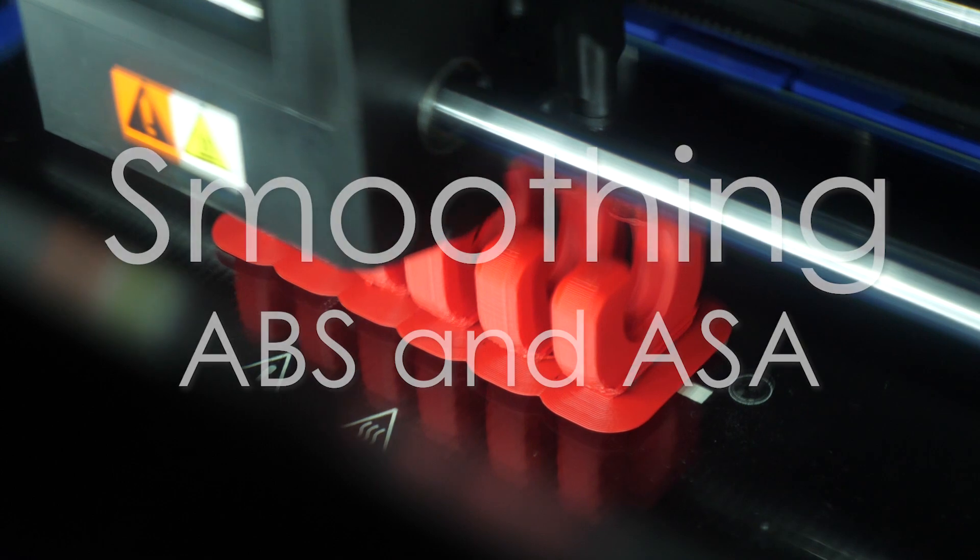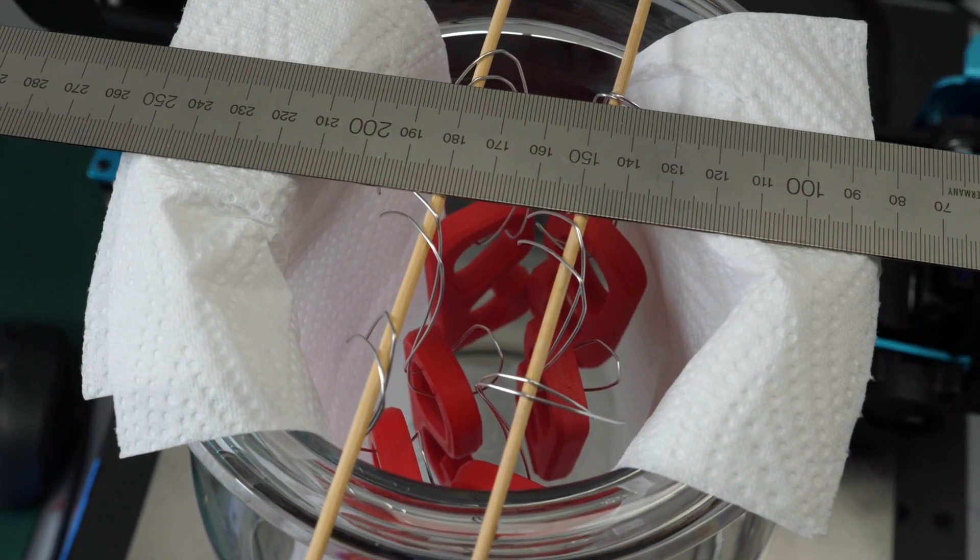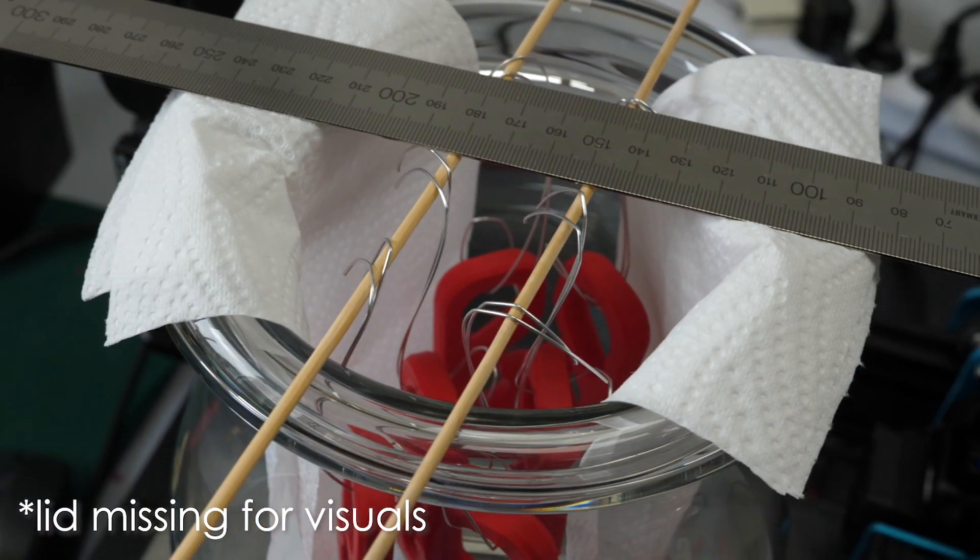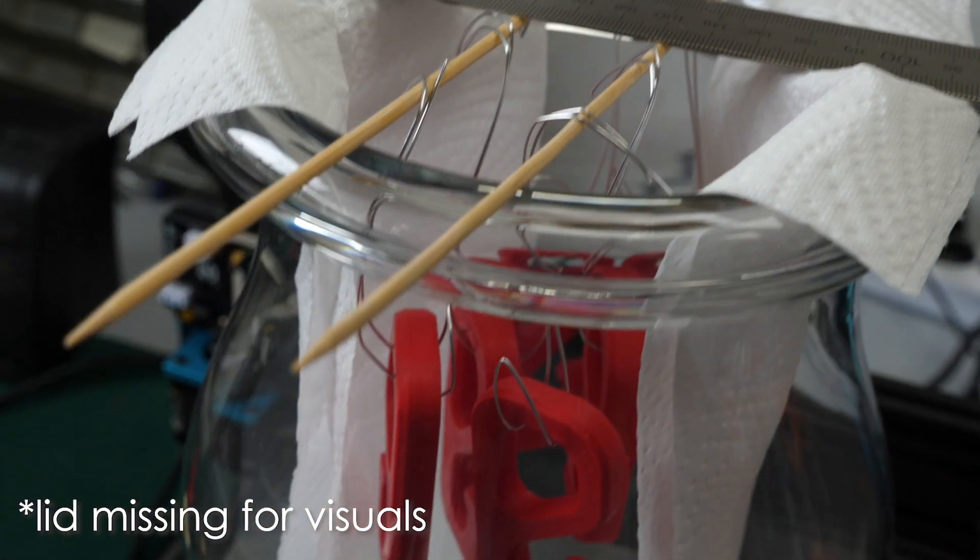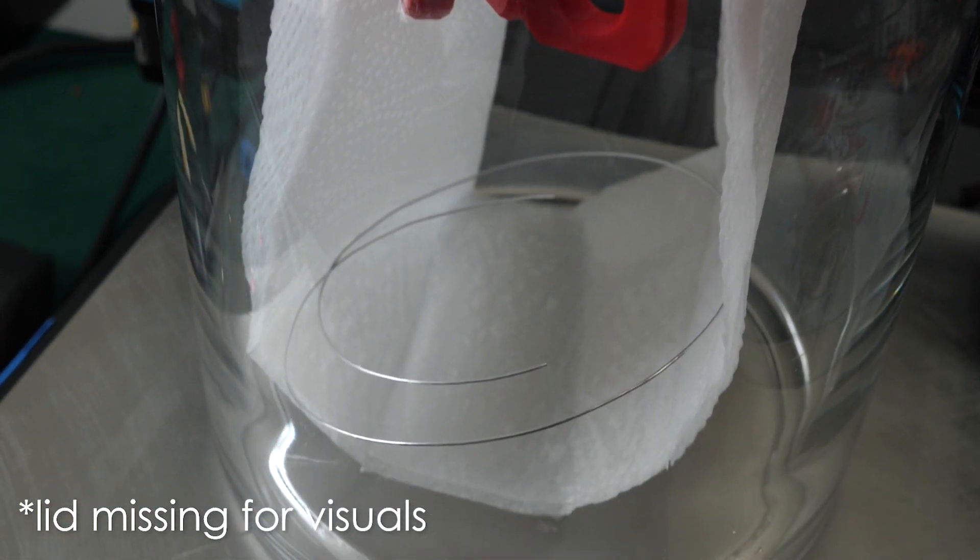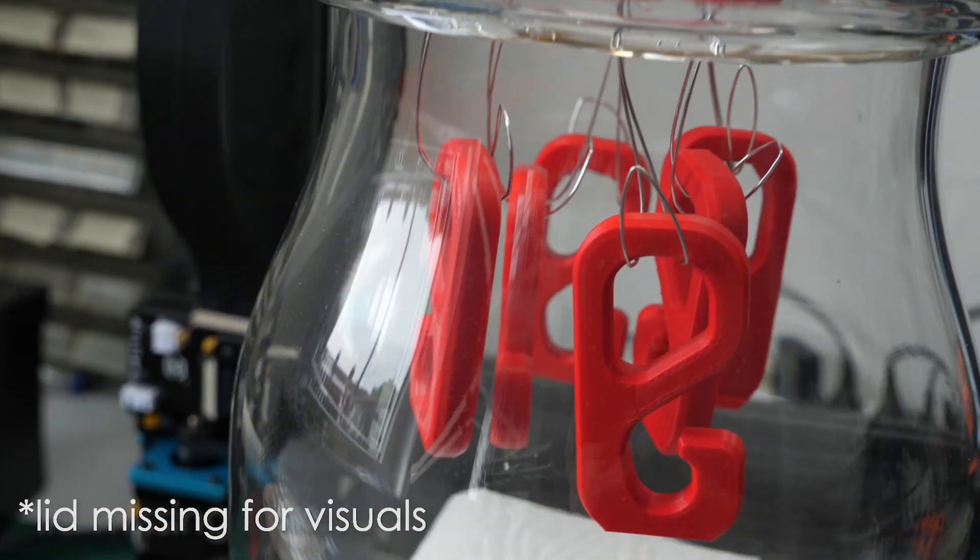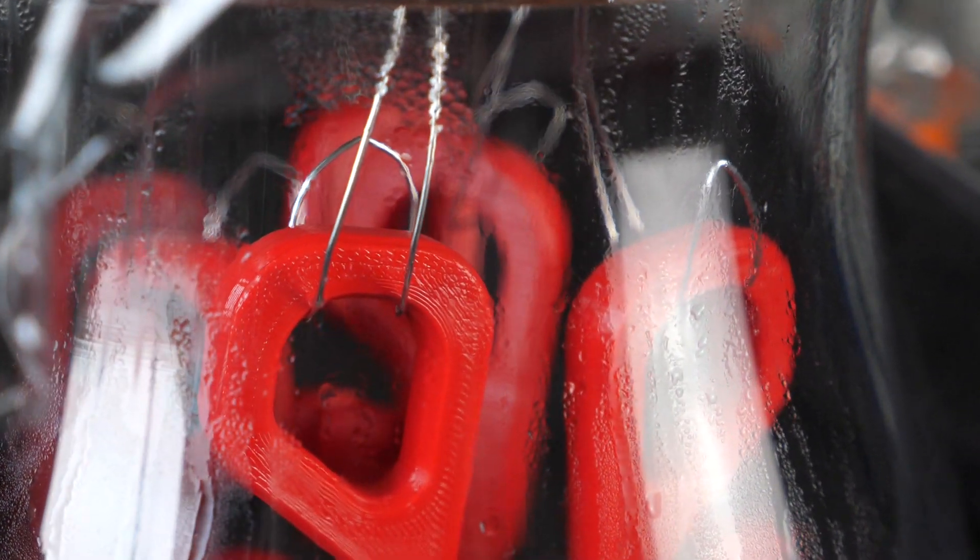ABS and ASA can be smoothed with acetone. I usually place a container on a heated print bed that is set to around 60 degrees Celsius with some acetone-soaked towels in it. The parts are then placed in the container without touching each other. I usually hang them but you can also just place them on the bottom. The acetone will evaporate and condense on the parts, dissolving the outer layers of the material and in this way smoothing them. Depending on the material and temperature, vapor smoothing can take from a couple of minutes to over an hour.